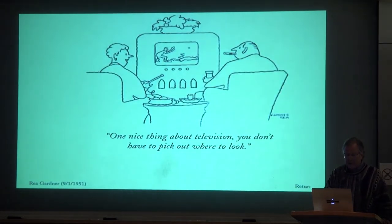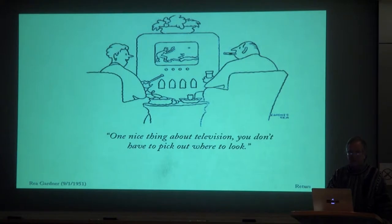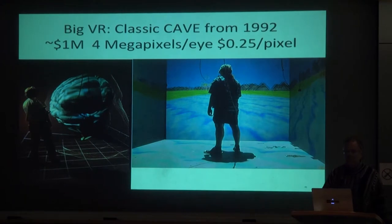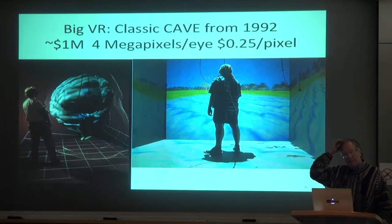Now I'm going to move to VR. I picked up this cartoon from 1951, the early days of home television. It says: 'One nice thing about television — you don't have to pick out where to look.' They're referring to the fact that at a sports game or theater, you look all over the place. But on TV, they tell you where to look. We blew that up with VR, because now you don't know where to look anymore.